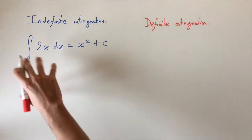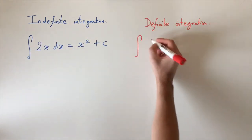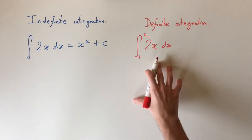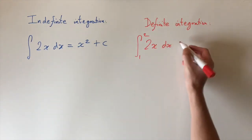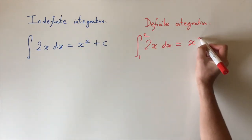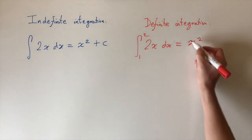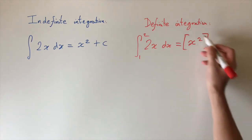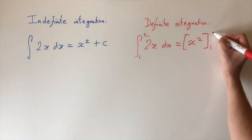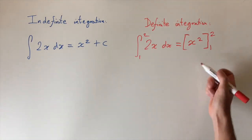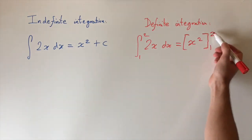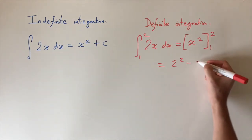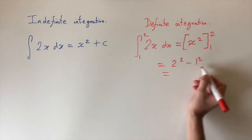Definite integration is pretty much the same except we have limits. An example would be the integral of 2x dx, but with limits 1 and 2. We start off the same by integrating the function, which gives x squared. It doesn't matter if we have a constant or not because it's going to cancel. Once we've integrated, we evaluate at the limits using bracket notation with the lower limit on the bottom and upper limit on the top. Starting with the top limit we get 2 squared, then subtract the bottom limit: 1 squared. This gives 4 minus 1, which is 3.